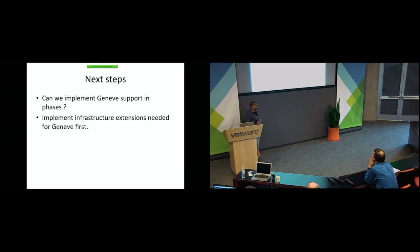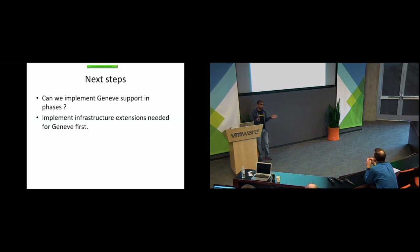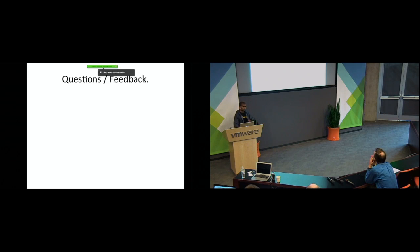Next steps: given that this is a significant amount of work, I was thinking we could implement Geneve support in phases. In the first phase, we add the common infrastructure extensions needed in the OVS codebase - like fixing the size limitations - and have some code that works with those limitations. Then we can slowly enhance Geneve support and handle all the other things needed, like critical and non-critical options. That's about it from me - any questions or feedback?